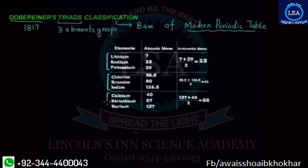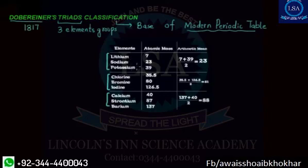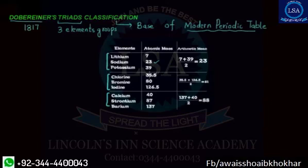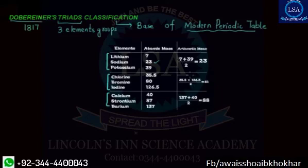What did we say? We take lithium and potassium, add their masses and divide by two — we call this the arithmetic mean — and we get the mass of sodium. The same method applies for chlorine and iodine.